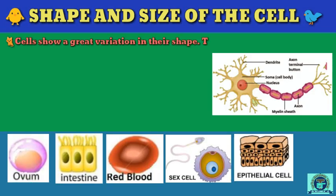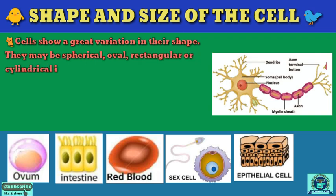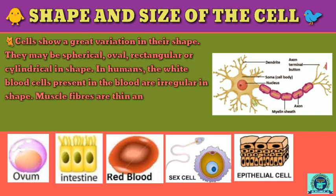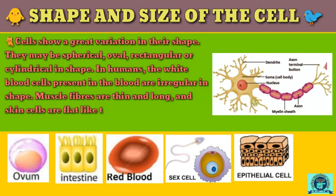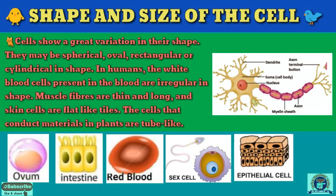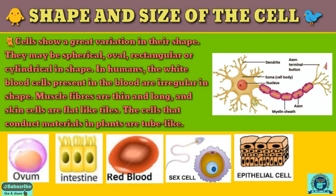Now dear students, here we understand the shape and size of the cell. Cells show great variation in their shape — they may be spherical, oval, rectangular, or cylindrical. In humans, white blood cells are irregular in shape, muscle fibers are thin and long, and skin cells are flat like tiles. The cells that conduct materials in plants are tube-like structures, as shown in the diagram below.